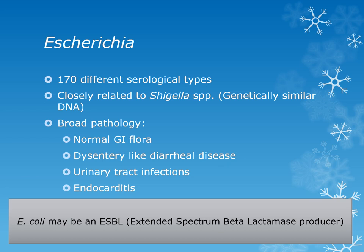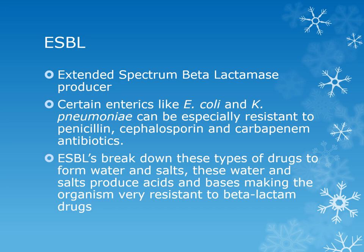E. coli might also be an extended spectrum beta-lactamase (ESBL) producer. Beta-lactamase positive organisms are resistant to penicillin, ampicillin, and first-generation cephalosporins. But ESBL E. coli — and in some cases Klebsiella — are resistant to penicillin and third- and fourth-generation cephalosporins, as well as carbapenem antibiotics. The ESBLs break down these drugs to form water and salts, making the organisms very resistant to beta-lactam drugs including penicillins, ampicillins, and cephalosporins.